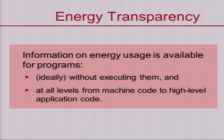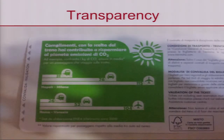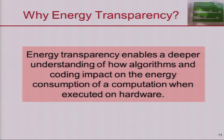Energy transparency, I believe, is a key to enabling all these things. By energy transparency, I mean information on energy usage of a program being available, ideally without executing the program, and at all levels of abstraction from machine code to high-level application code. Here, for instance, is the back of a train ticket in Italy which tells us the emission of CO2 depending on the mode of travel and the distance traveled. I want exactly the same for computation — a function that tells me how much energy I'm going to burn if I run this, to gain a deeper understanding of how algorithms and encoding impact on the energy consumption when executed on the target hardware platform.